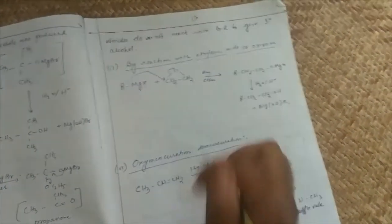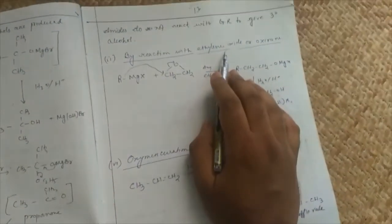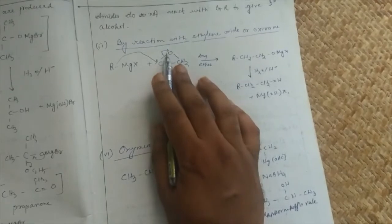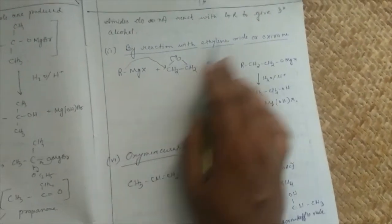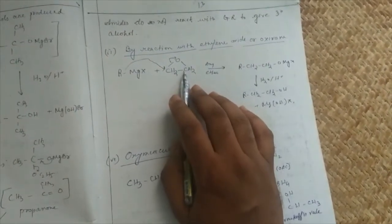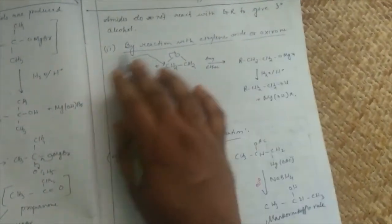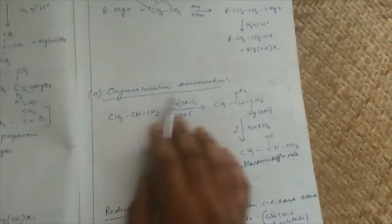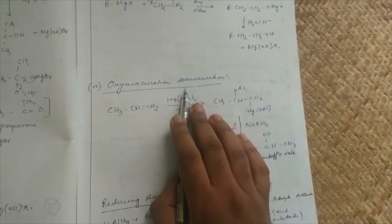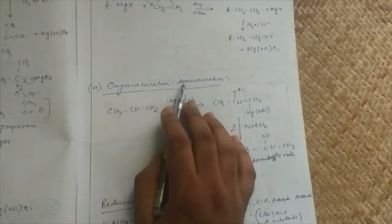I will tell you about the reaction with ethylene oxide and oxirane. Ethylene oxide and oxirane gives alcohol. The mechanism is very simple. Oxymercuration and demercuration, this is called hydroboration and oxidation.